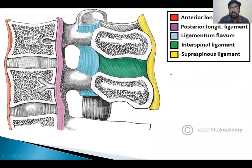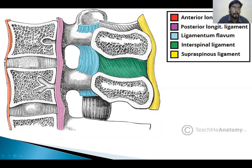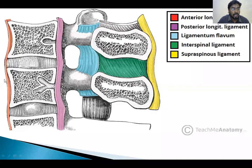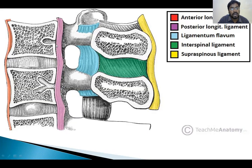What are the common ligaments of the spine? This is the anterior part and this is the posterior part of the spine. Anterior to the vertebral bodies is a longitudinal ligament called the anterior longitudinal ligament. It attaches to the anterior surface of the vertebra and the annulus part of the intervertebral disc. This is the posterior longitudinal ligament, which attaches to the posterior part of the vertebral body and the posterior part of the annulus.